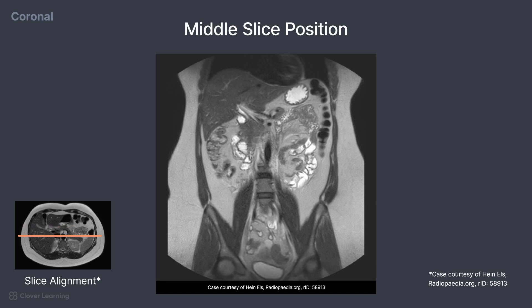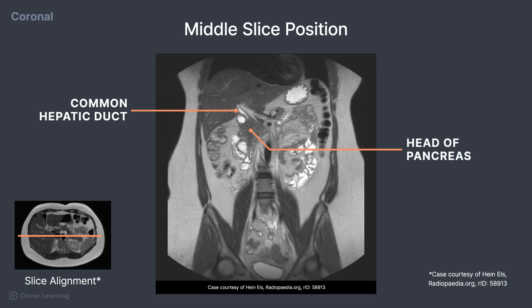While demonstrated better on an MRCP, you can see a small portion of the common hepatic duct emerging from the liver, along with the head of the pancreas.